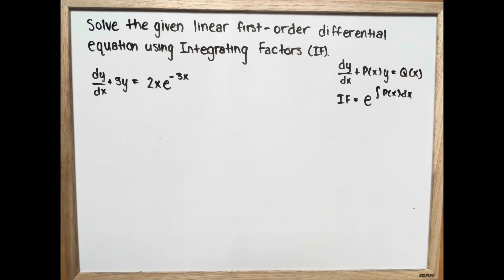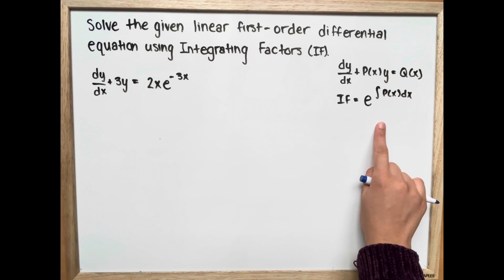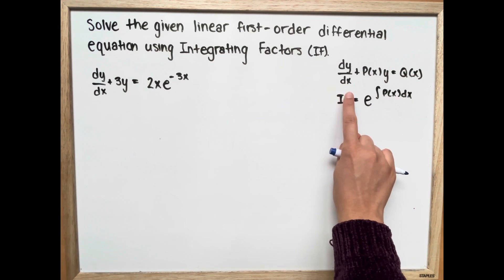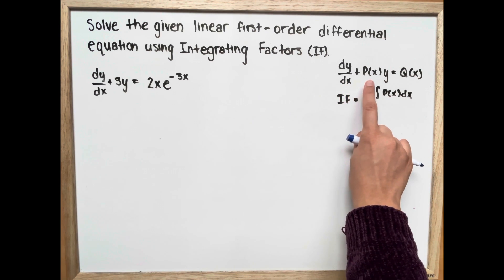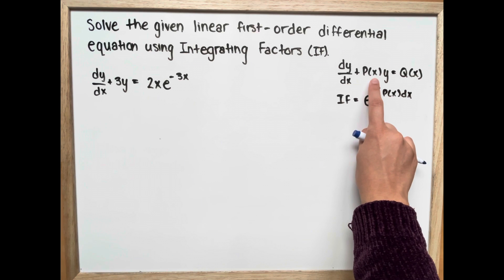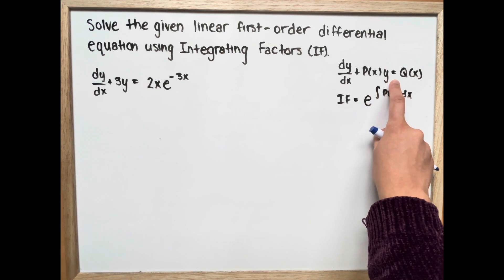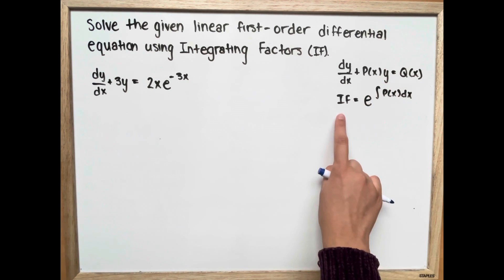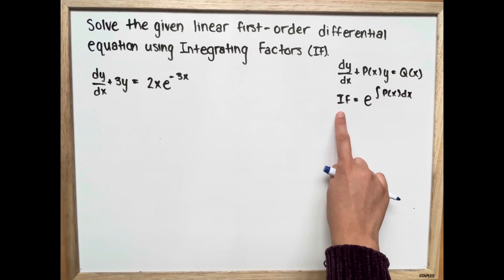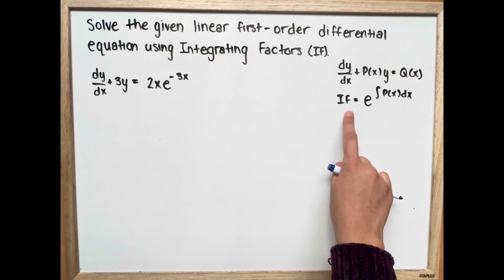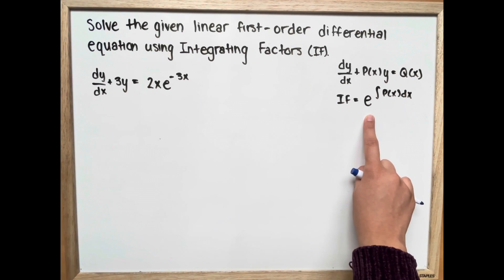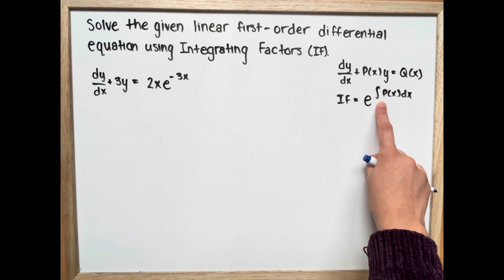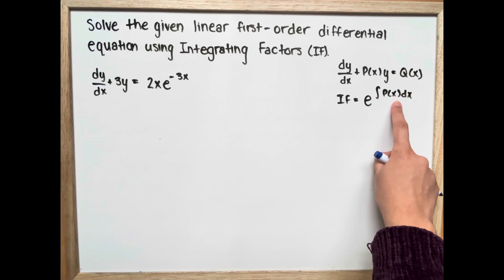In order to confirm it is a first-order differential equation, it must be in this format: dy/dx plus P(x) multiplied by y is equal to Q(x). Our integrating factor, also known as IF, is equal to e raised to the integral of P(x) dx.